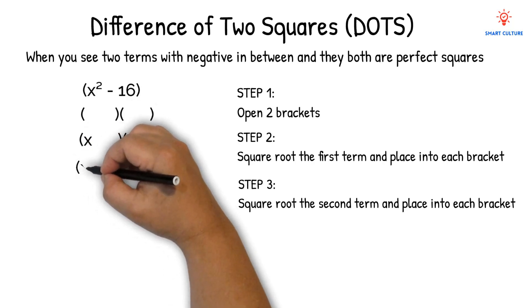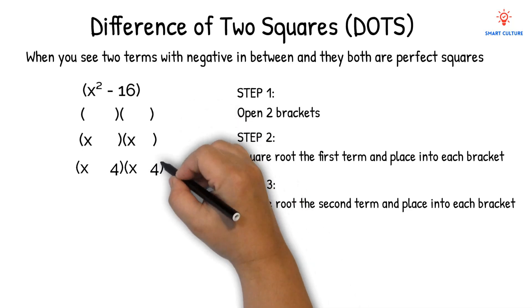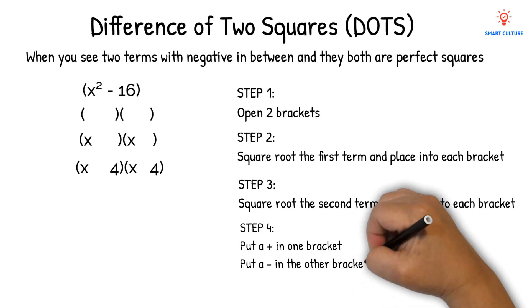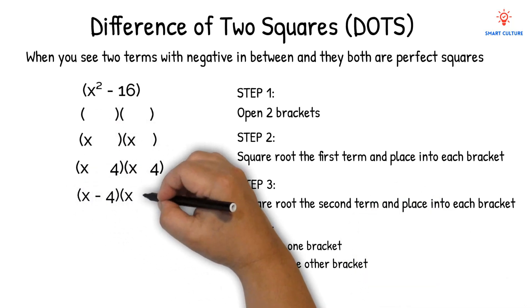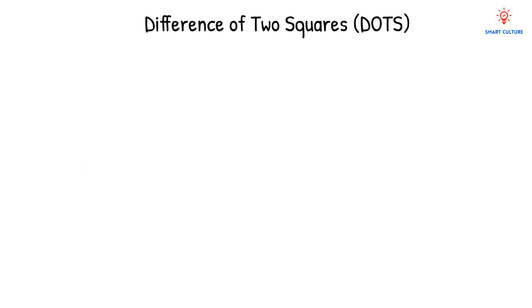What is the square root of 16? 4. So we will place 4 in each bracket. Step 4: Put a positive in one bracket and a negative in the other bracket. Now we have in brackets x minus 4 and in another bracket x plus 4. Let's do another one.